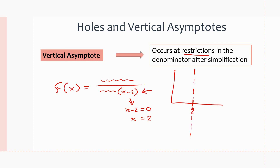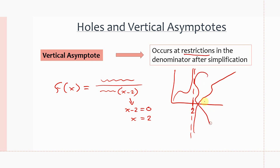So x = 2 will not be in the domain, and the graph of f(x) will never touch the vertical line x = 2. The graph might go around it — up or down — but it will never touch it.